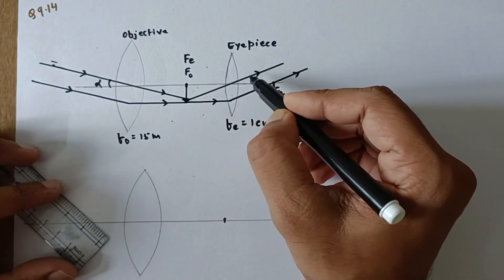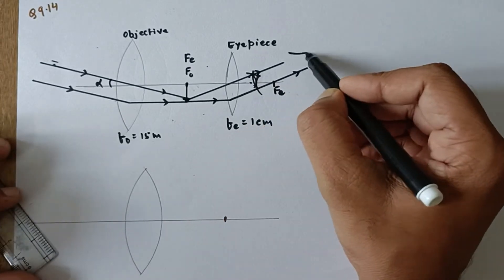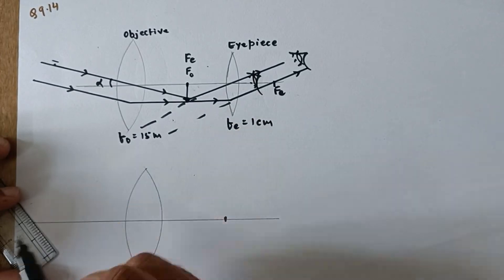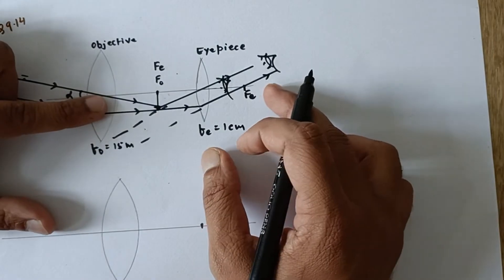Now since the eye is located very close to the eyepiece, I may draw it over here or here, the final image is going to be formed at infinity. So unless specified, we will consider this diagram only.